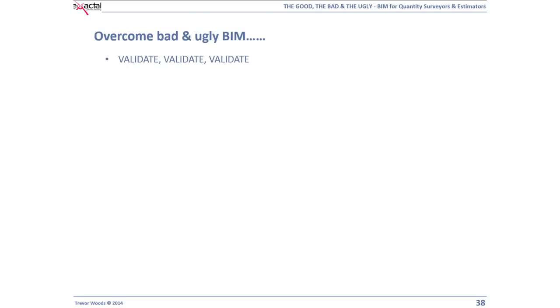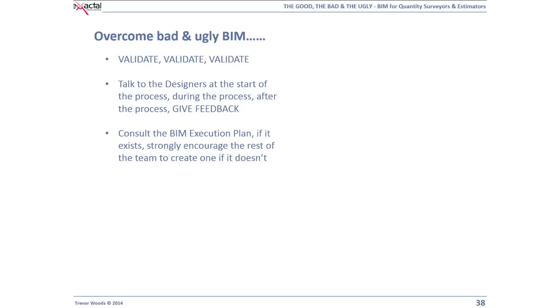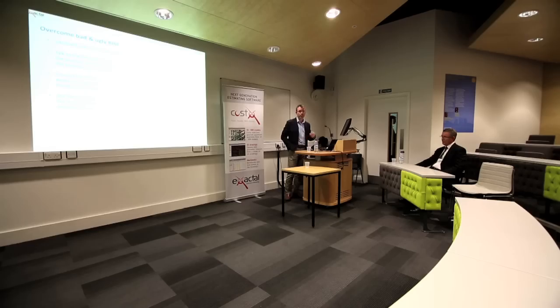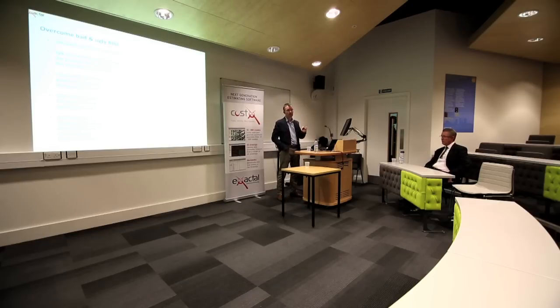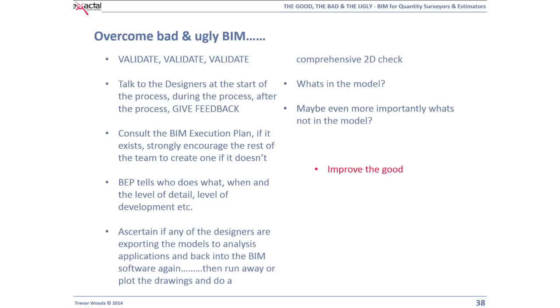How do you overcome bad and ugly BIM? Validate, validate, validate. Talk to designers at the start, during and after the process. Give them feedback — tell them what does and doesn't work. There should be a BIM execution plan on the project setting out who does what, what software they're using, software versions — look for it and check if designers are exporting models for analysis. Figure out what's in the model, but more importantly, what's NOT in the model. Is there a gap in scope? Not everything will be modelled. You need to improve the good, fix the bad and eliminate the ugly.